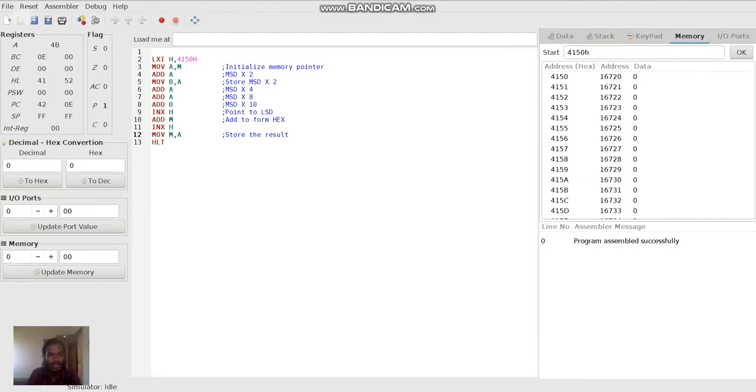First, we have initialized the memory pointer to 4150 hex. Then, we have taken the most significant digit and multiplied it 10 times by repeated addition. Then we have given the least significant digit and it is added to form the final hexadecimal number which we need, and finally, the result is stored.